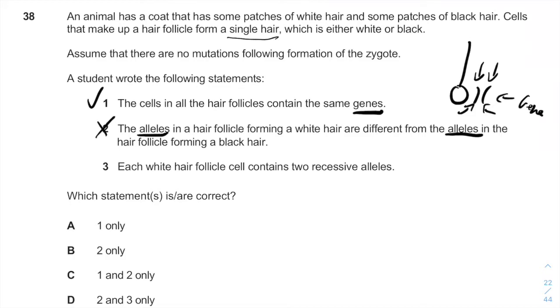Each white hair follicle cell contains two recessive alleles. So each white hair follicle cell contains two recessive alleles. It doesn't make sense because if you have two alleles, you already have no black alleles. So this is why I think this question talks about a bar body formation of the X chromosomes in females and not actually alleles of different cells.